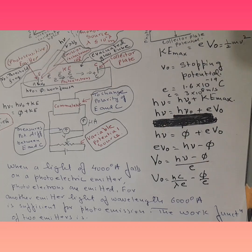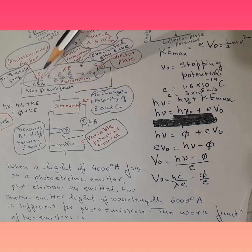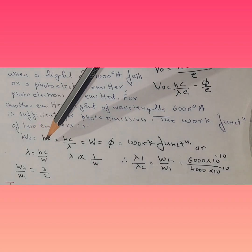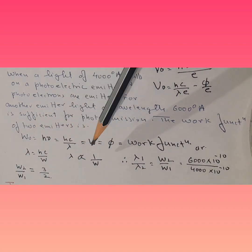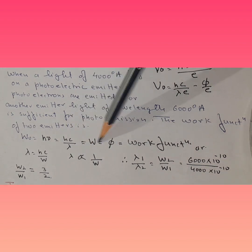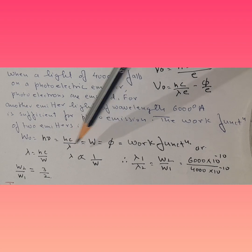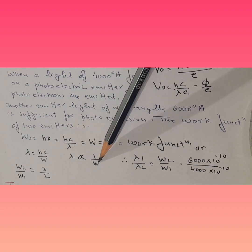What we have got to find is the work function of these two emitters. In the first case the emitter was irradiated with wavelength 4000 angstrom and in the second case with 6000 angstrom. We know work function is h-nu, which is hc over lambda. The relationship between work function and lambda is inversely proportional.